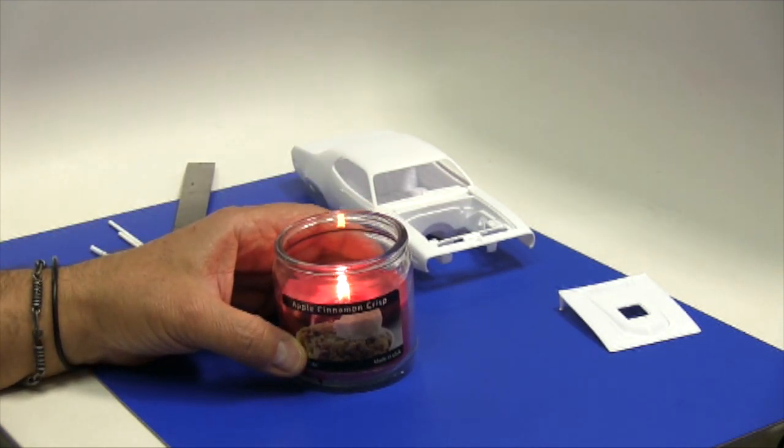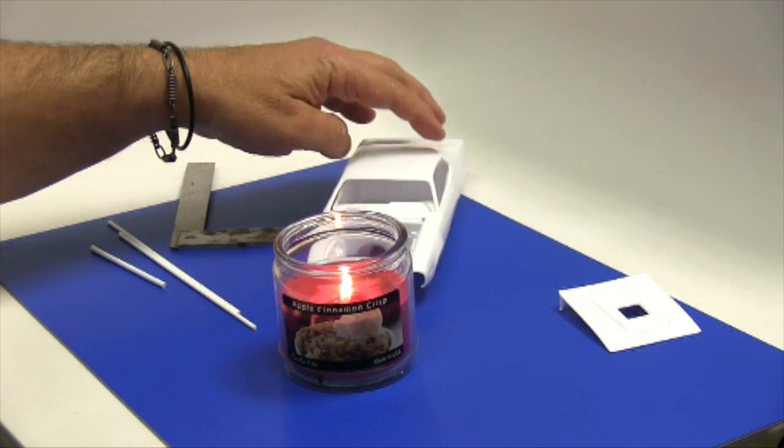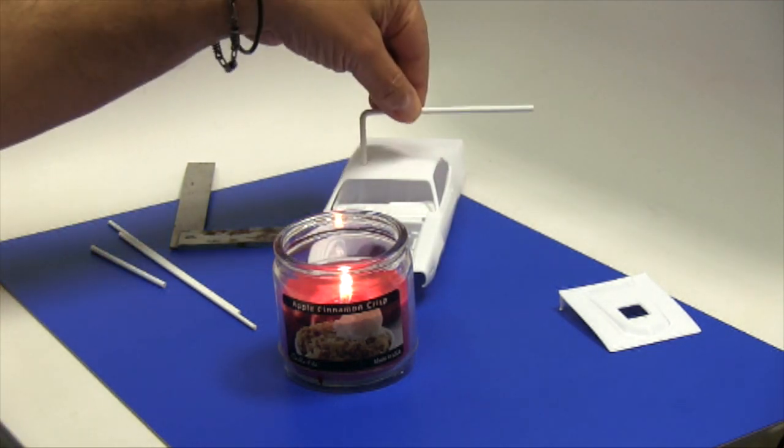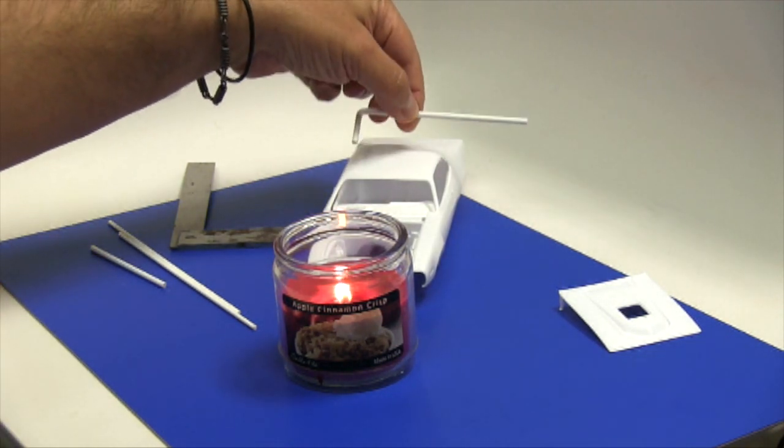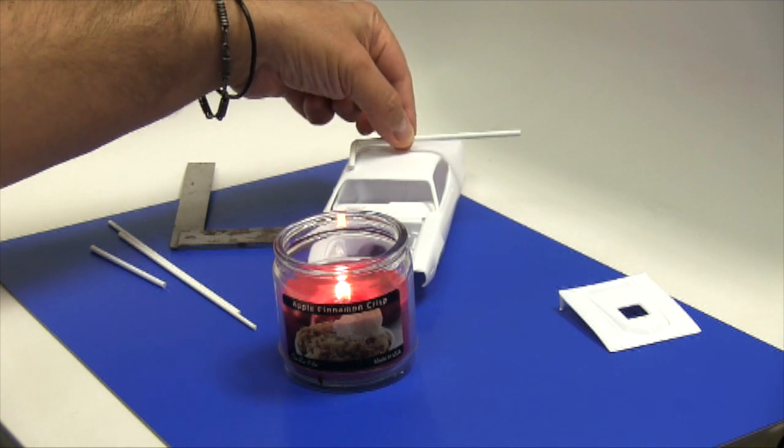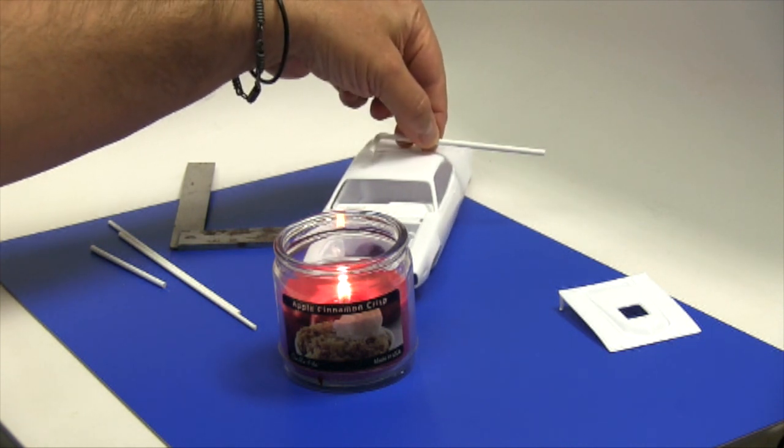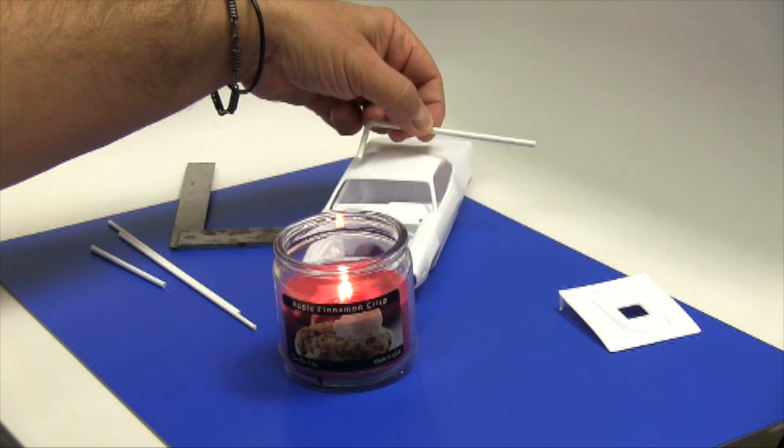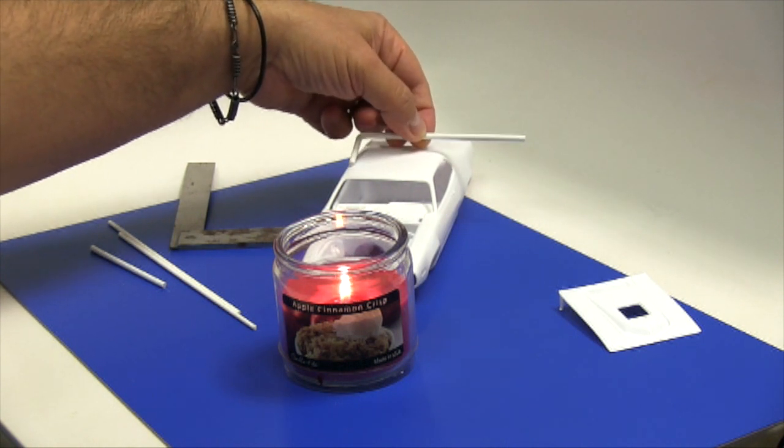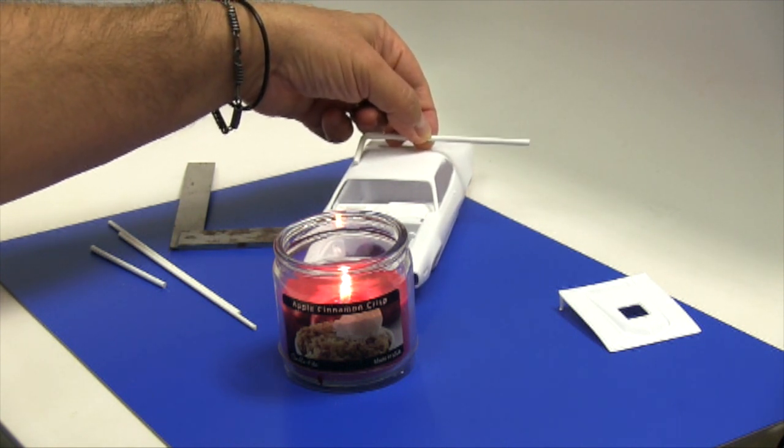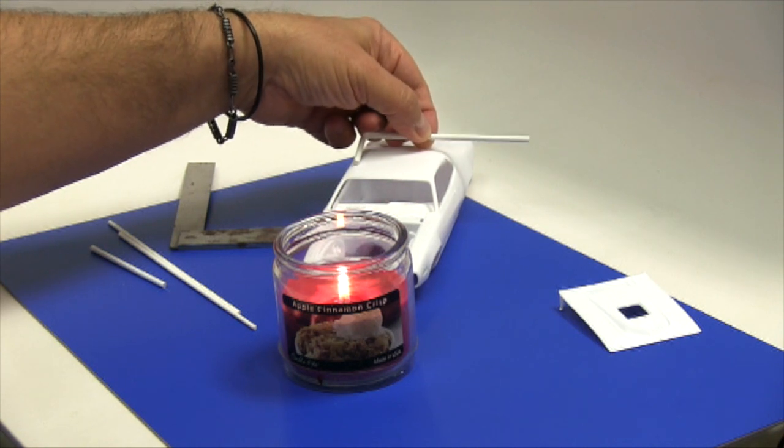But anyway, you want to create a roll cage that's going to fit in this interior. This is how you can eye it more or less. You don't want to go crazy taking measurements and all that because it's not as difficult as it looks.